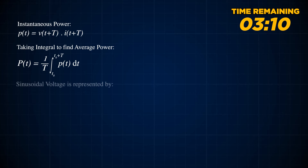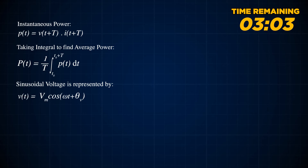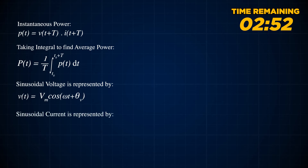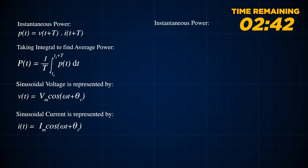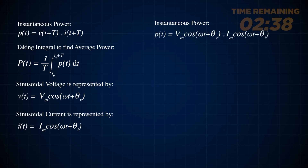In an AC circuit, the voltage is sinusoidal and can be represented as V(t) = Vm × cos(ωt + θv), where Vm is the maximum amplitude, ω is the frequency, and θv is the phase shift. The current will also be sinusoidal with the same frequency, represented as Im × cos(ωt + θi). The instantaneous power is found by multiplying V(t) by i(t), which gives us this equation.